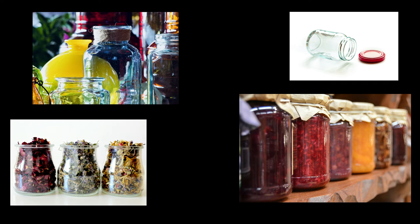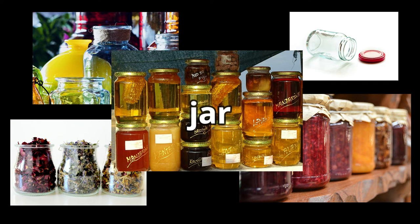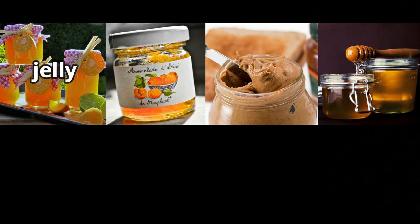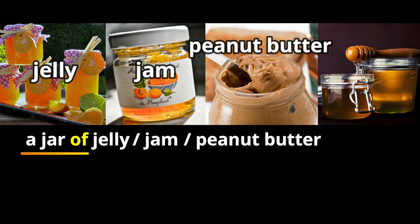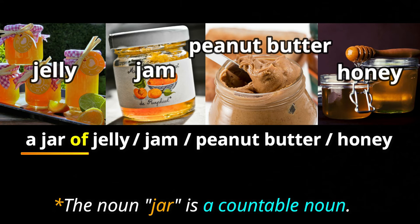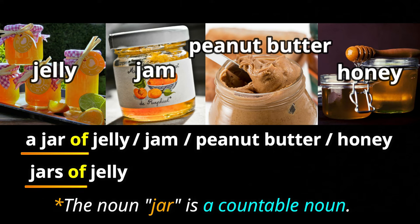Another popular container is a jar. Usually we put sticky stuff in a jar — for example, jelly: a jar of jelly. Or jam: a jar of jam. A jar of peanut butter or a jar of honey. To make it plural we can say jars of jelly, jars of jam, jars of peanut butter, or jars of honey.